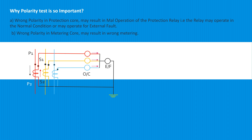In bus or transformer differential circuits, or overcurrent or earth fault circuits, the sum of currents should be zero. Any CT with reversed polarity would result in a non-zero current, which could result in circuit breakers opening.